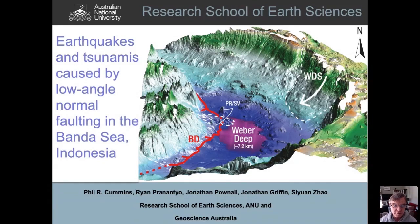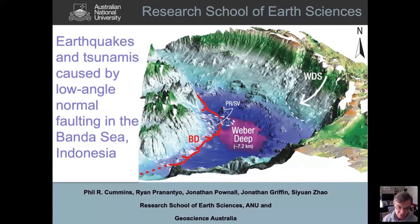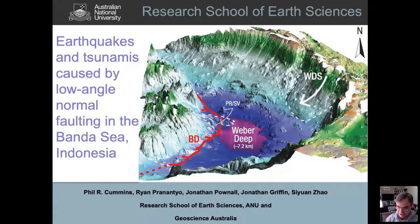It's a real pleasure to talk about this work. We were fortunate to publish it in Nature Geoscience a few months ago. It grew out of my student Riam Pranancho's thesis, who was working on historical tsunamis in eastern Indonesia. We were able to combine this with remarkable work by Jonathan Pownall, as well as work by Jonathan Griffin — now in New Zealand — and PhD student Xian Zhao at ANU.